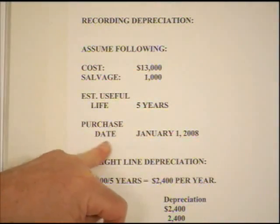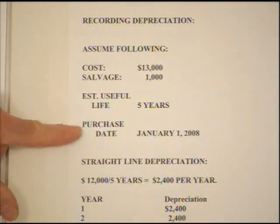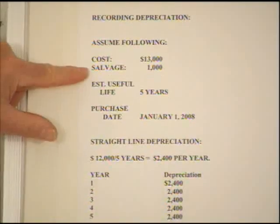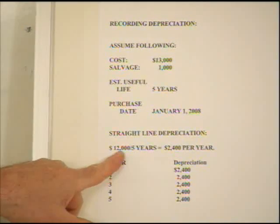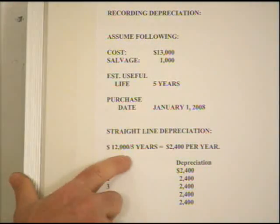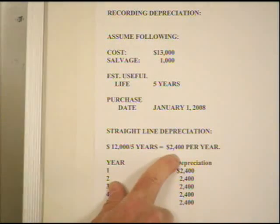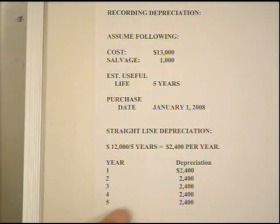All of these numbers will always be supplied to you. The final thing we need is the purchase date, and in this case it's January 1st, 2008. To depreciate an asset using straight line, the formula is: take the cost minus the residual or salvage value — $13,000 minus $1,000 equals $12,000. That's our depreciable cost. We divide that by the number of years: $12,000 divided by 5 years comes out to $2,400 per year. Therefore, in each of these years I would take $2,400.